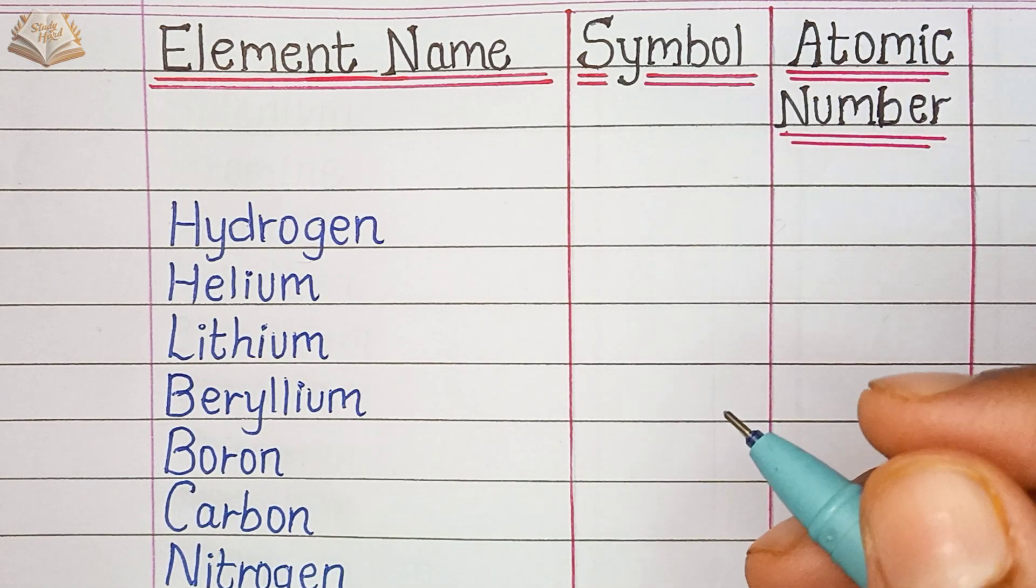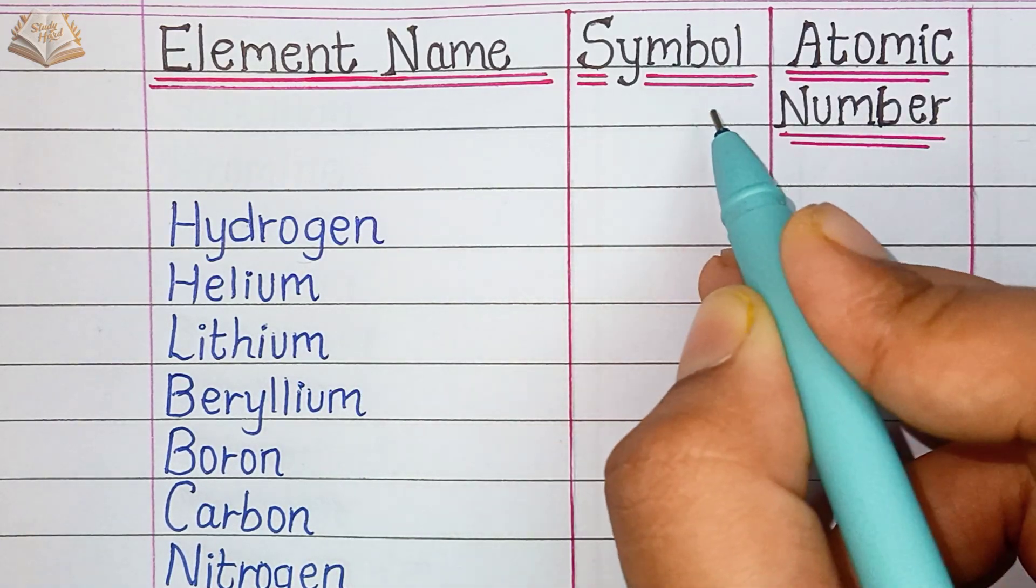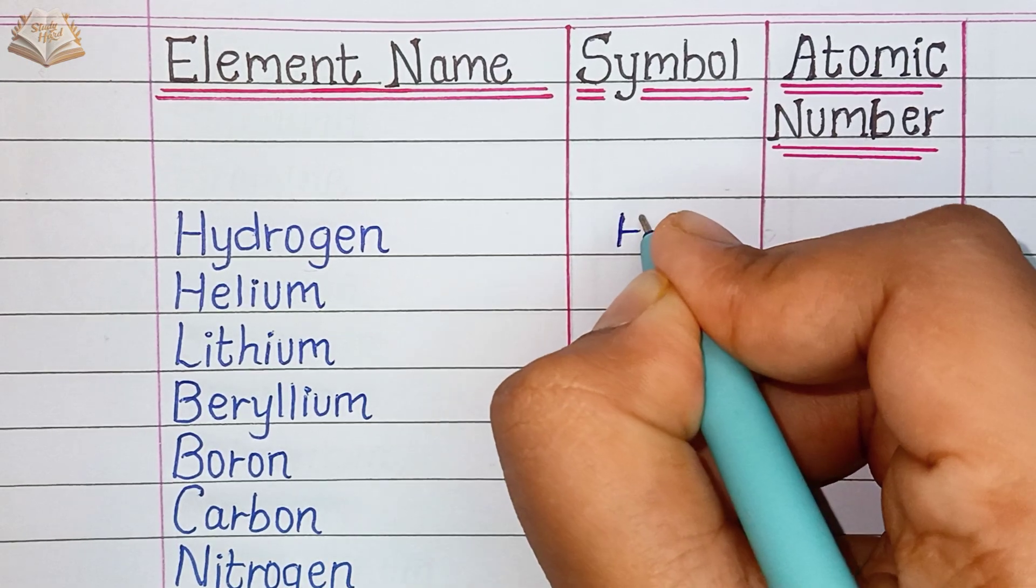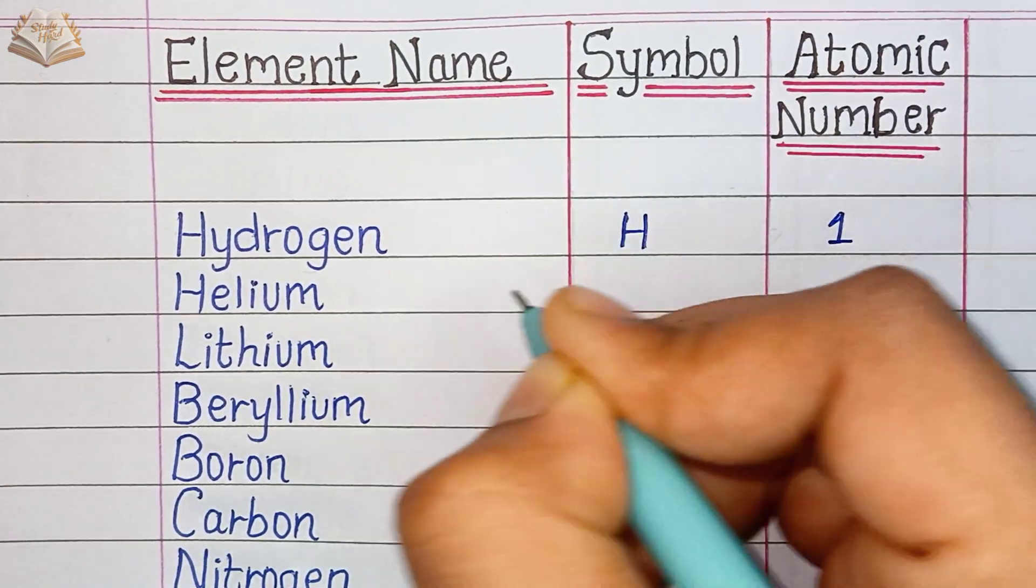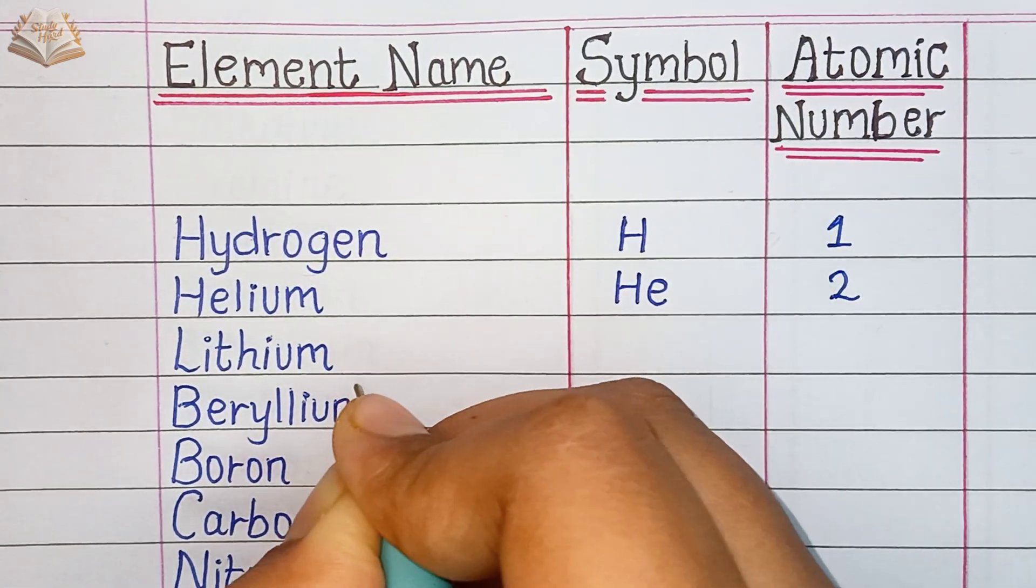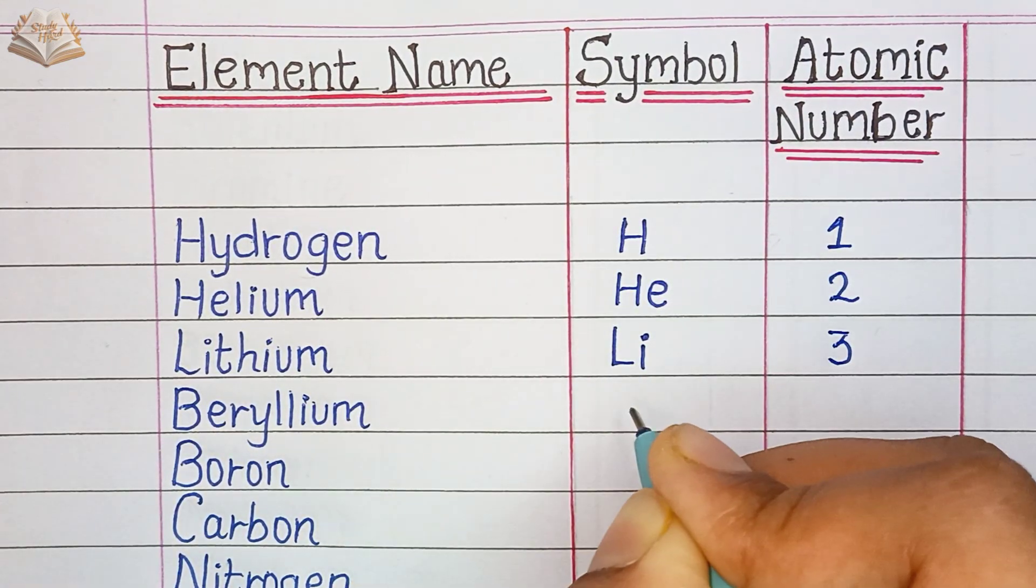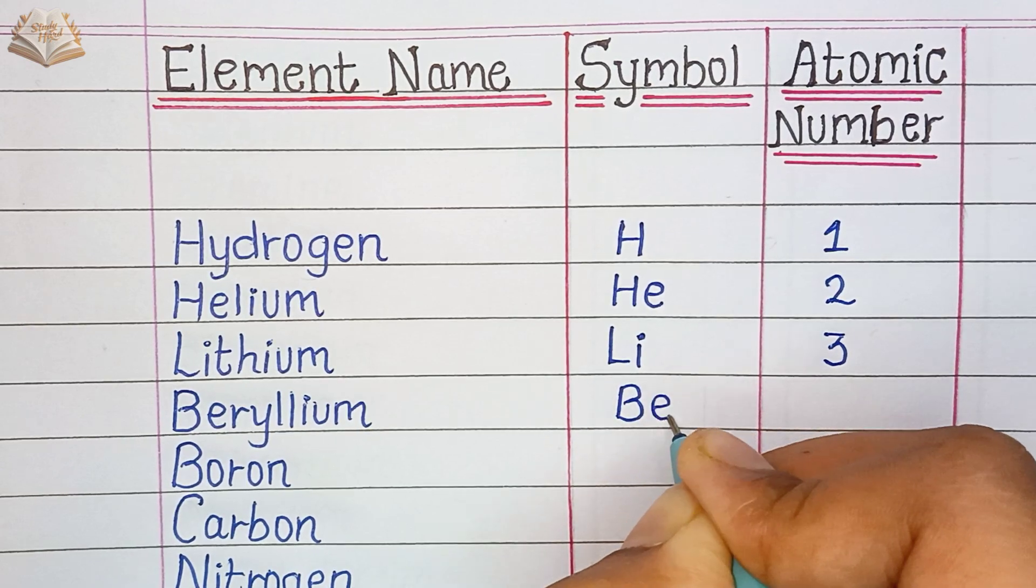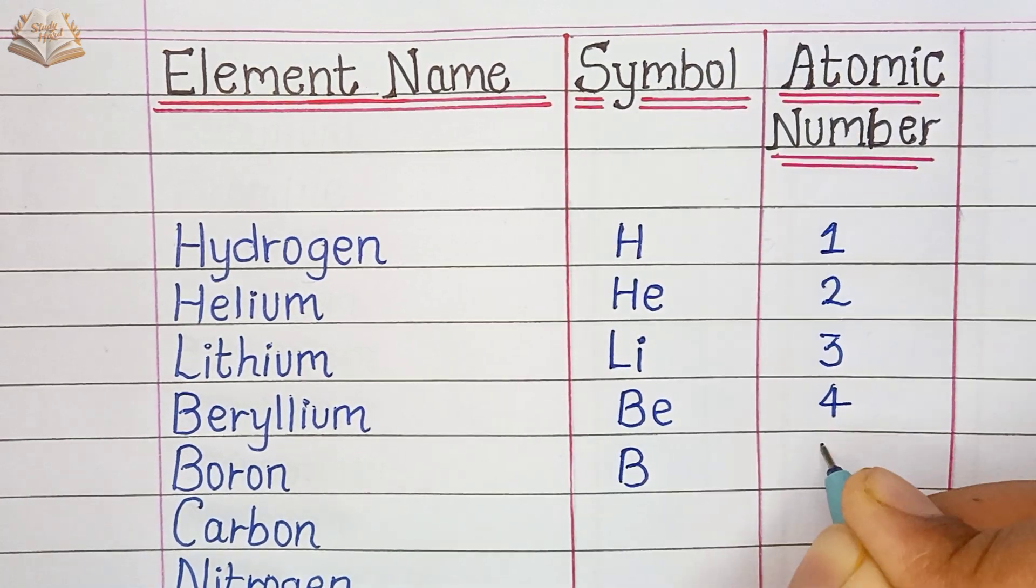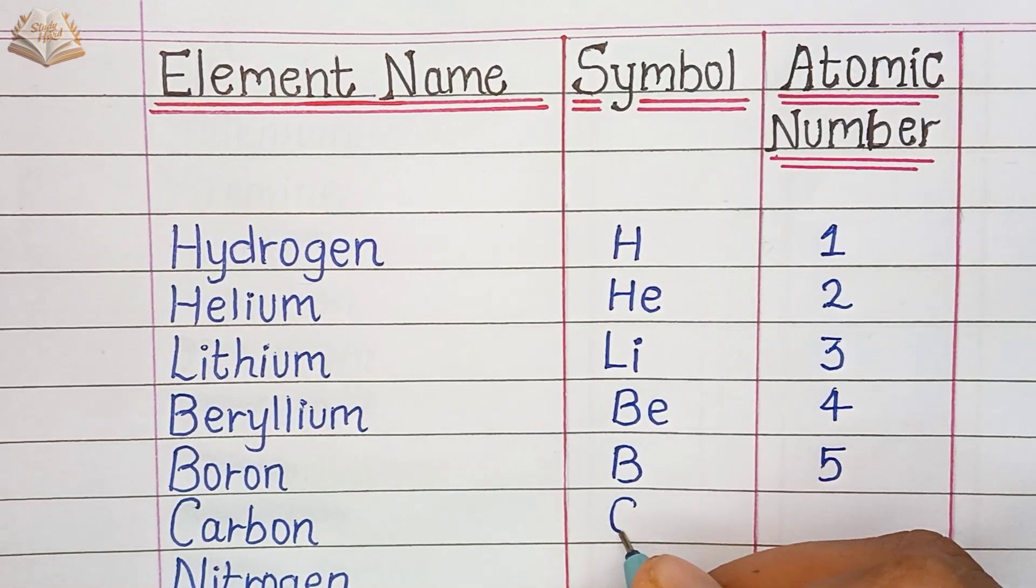Hello everyone, welcome to Study Heart. In this video you will learn elements name, symbol, and atomic number. So let's start. Hydrogen, symbol H, atomic number 1. Helium, symbol He, atomic number 2. Lithium, symbol Li, atomic number 3. Beryllium, symbol Be, atomic number 4. Boron, symbol B, atomic number 5. Carbon, symbol C, atomic number 6.